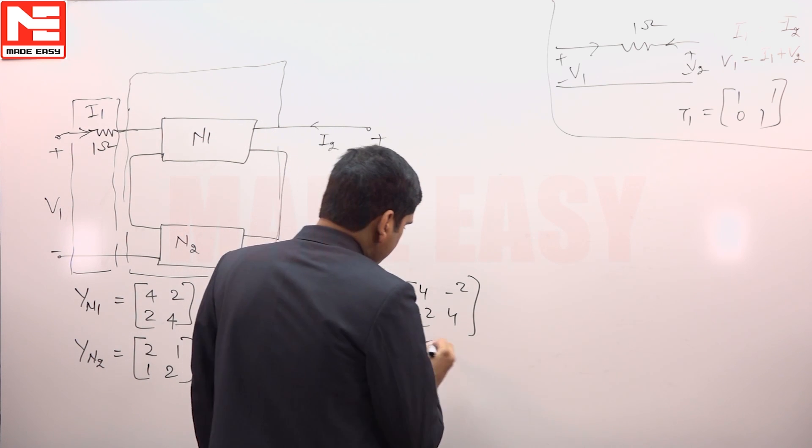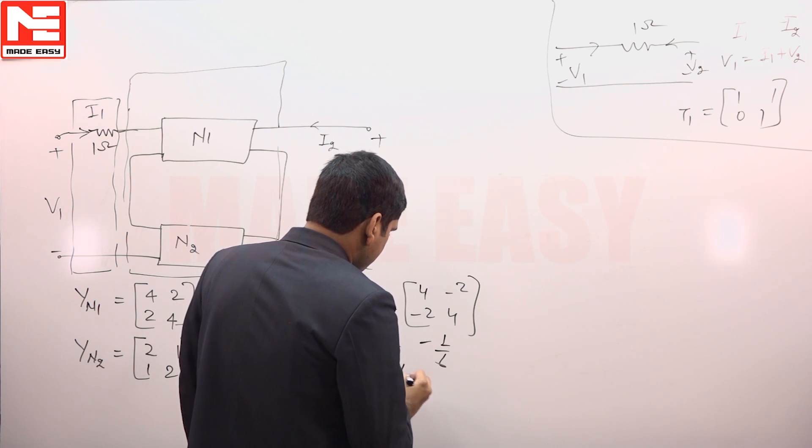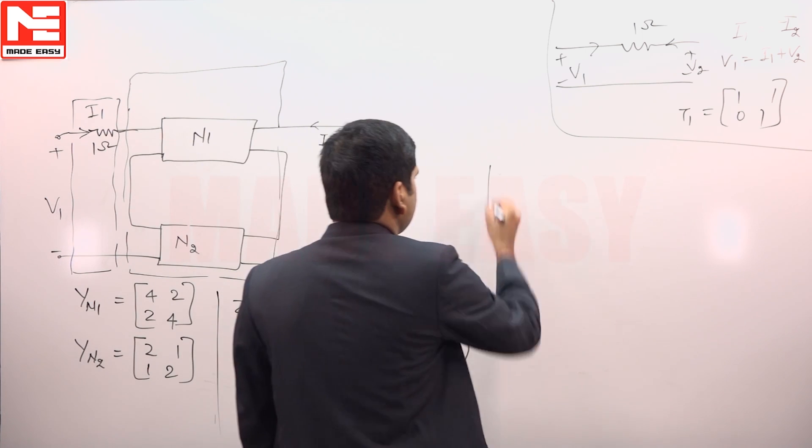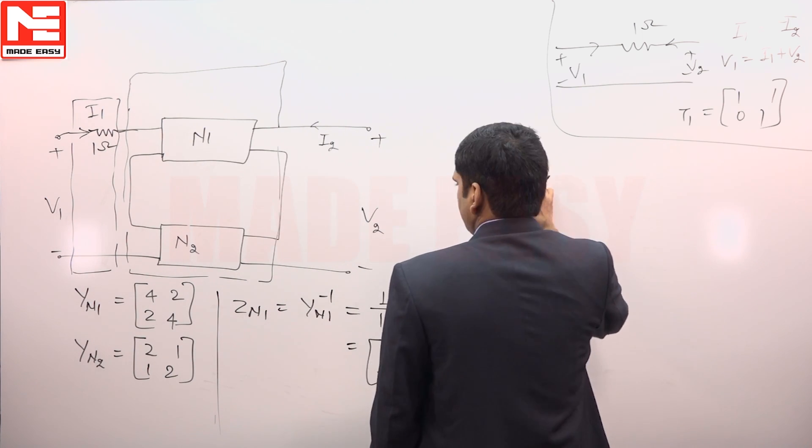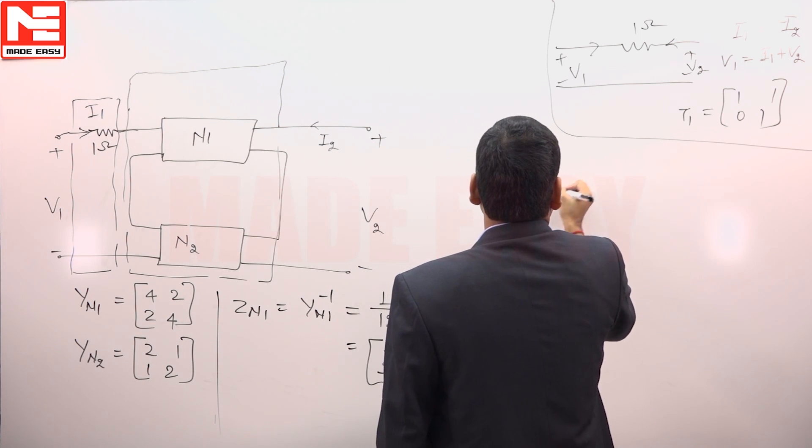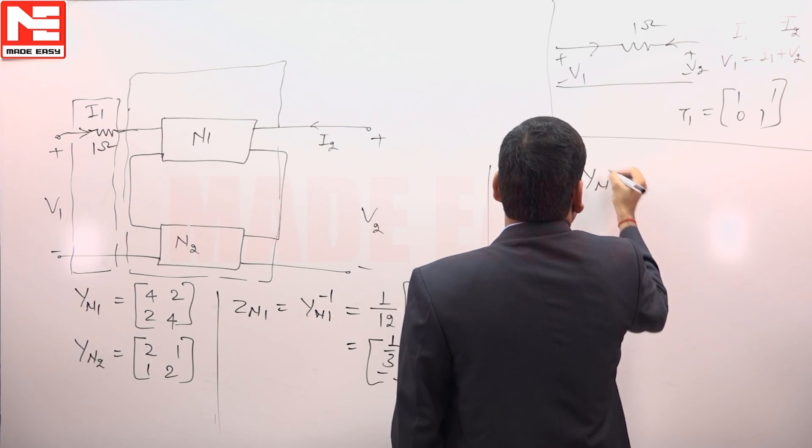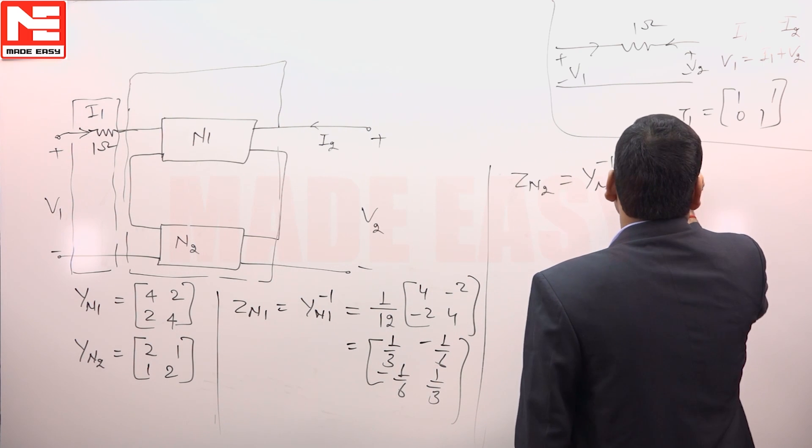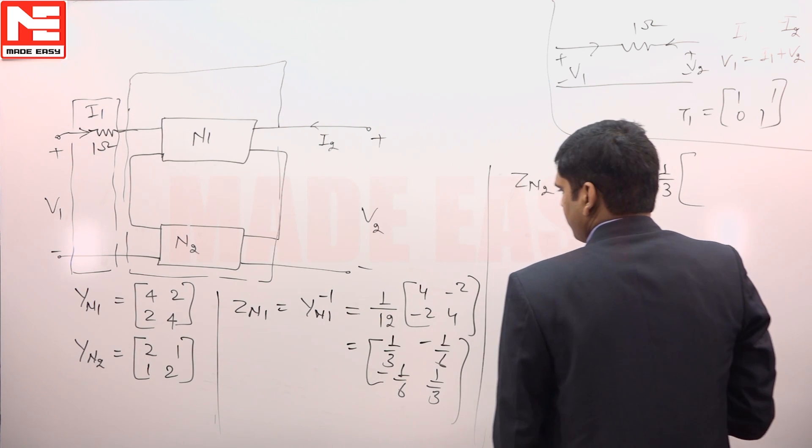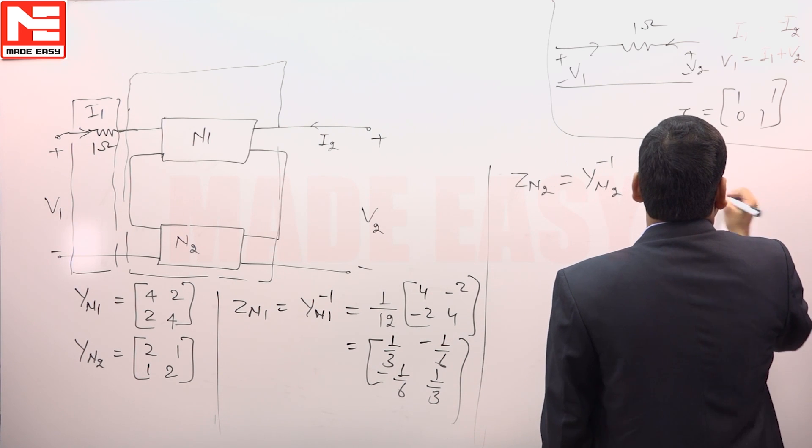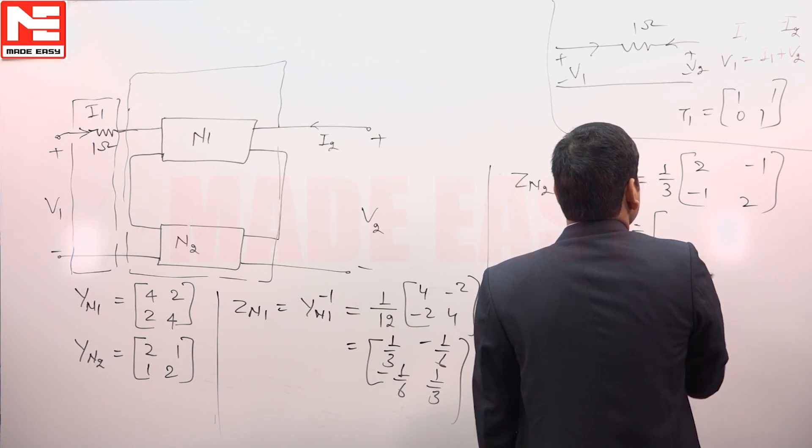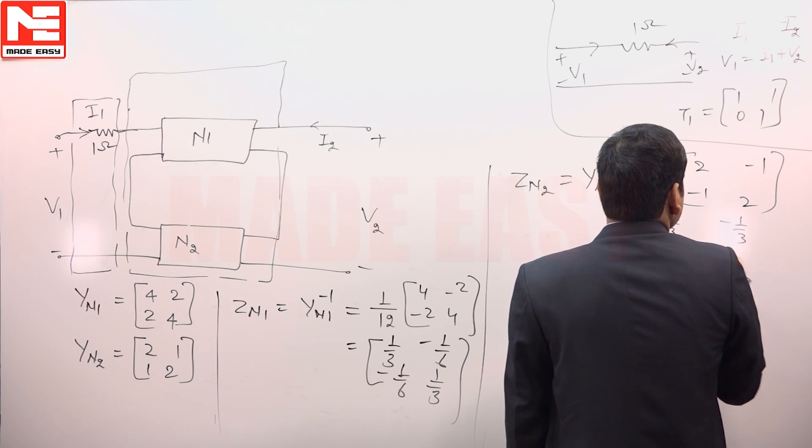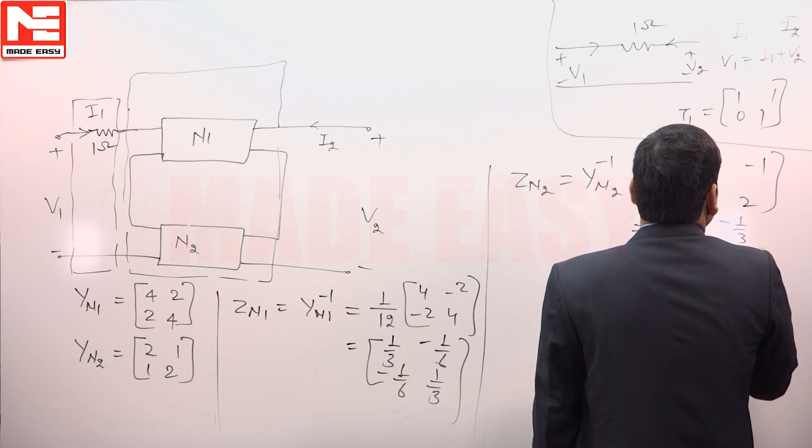Similarly, Y N2 is given to us, so Z N2 is equal to Y N2 inverse and this will come out as 4 minus 1 that is 3. So, 1 upon 3 and this will become as 2, 2 minus 1 minus 1, so it will be equal to 2 by 3 minus 1 by 3 minus 1 by 3 and 2 by 3.